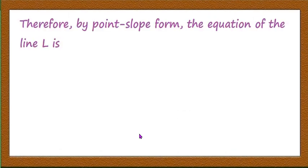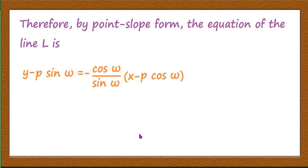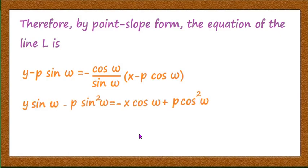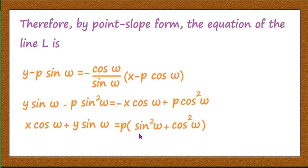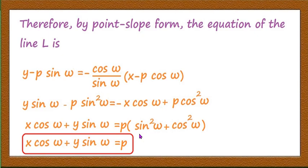Using the point-slope form, the equation of the line is y - p sin omega = -cot omega into (x - p cos omega), which can be written as y - p sin omega = -(cos omega/sin omega)(x - p cos omega). Cross-multiplying: y sin omega - p sin²omega = -x cos omega + p cos²omega. Rearranging: x cos omega + y sin omega = p(sin²omega + cos²omega) = p. Therefore, x cos omega + y sin omega = p, which is the normal form of the equation of the line.